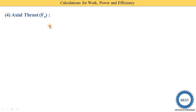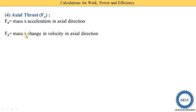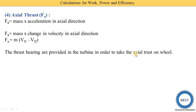The last term is axial thrust, denoted as Fa. Axial thrust is a force in the axial direction, equal to mass times the change in velocity in the axial direction. Instead of whirl velocities Vw1 and Vw2, we use the flow velocities Vf1 and Vf2, which act in the axial direction. So Fa equals M times (Vf1 minus Vf2). Thrust bearings are provided in the turbine to handle this axial thrust on the wheel.